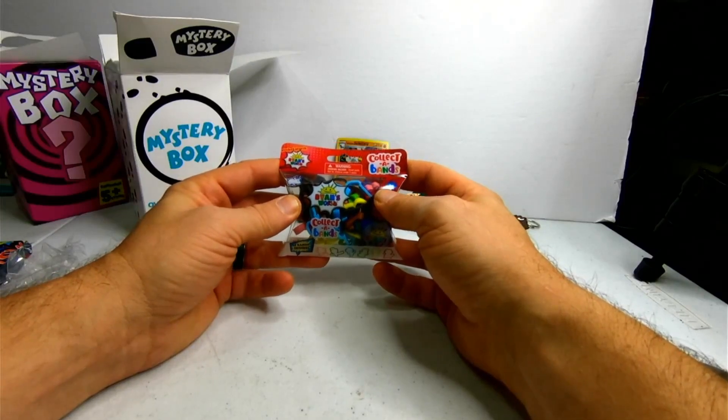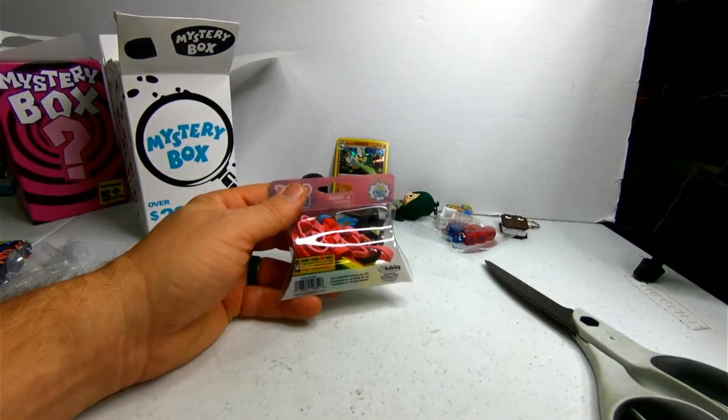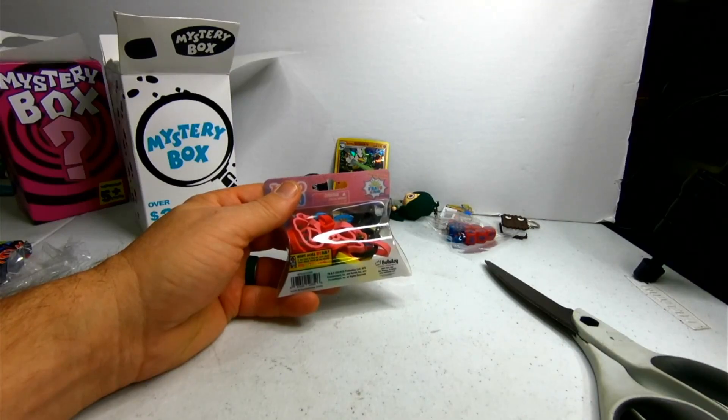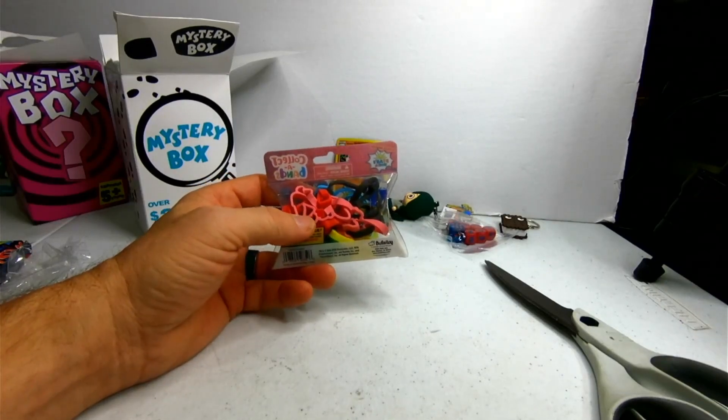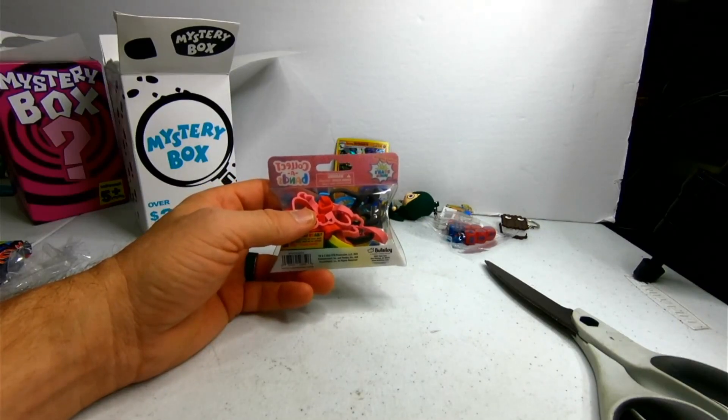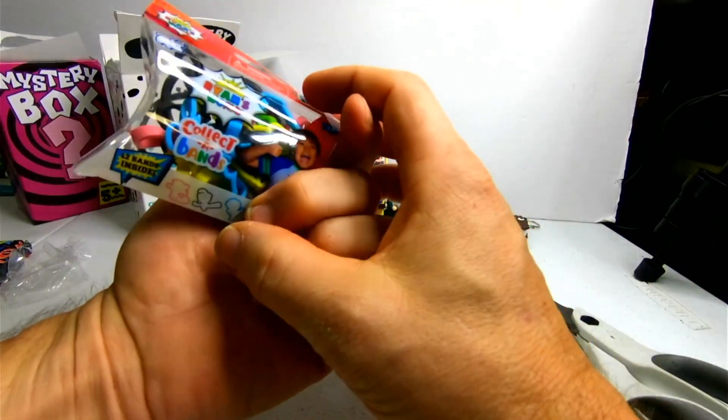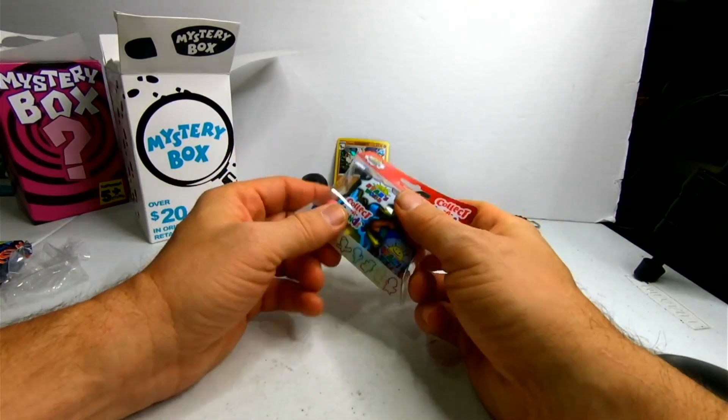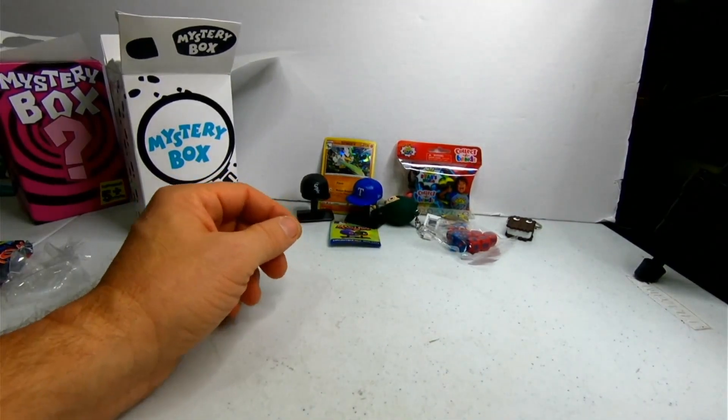Next item. Ryan's World collect-a-bands. So far, we're not doing so good. Now, I know Ryan's World stuff does have some value, but we're going to check this one. A whole case of them. Twelve package goes for twenty-two dollars. So twenty-two divided by twelve, so we'll say about two dollars. So we're up to about four dollars. I'm not going to open these up. They are just little, I don't know, I guess they're wristbands. Collect-a-bands. I don't know what you do with them. I'm not going to open that one up.